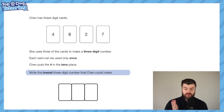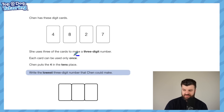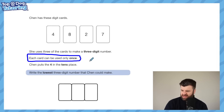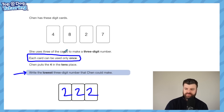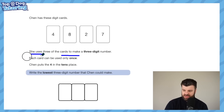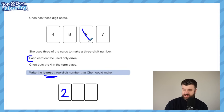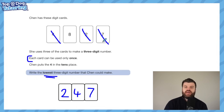Let's have a look. Chen has digit cards: 4, 8, 2 and 7. She uses three of these cards to make a three-digit number - each card can only be used once. This is vital information. If you rush and just go straight to 'write the lowest three-digit number,' you might think it's just 222 - no! Read the question carefully. Each card can only be used once, so the 2 goes in the hundreds place, then 4 in the tens, then 7. The answer is 247.